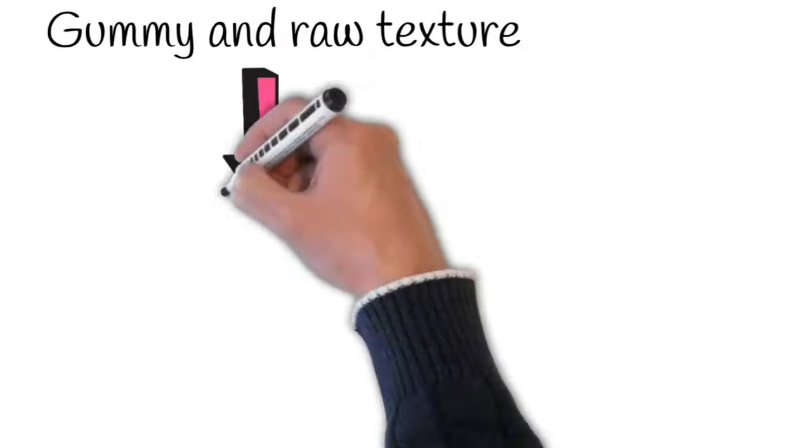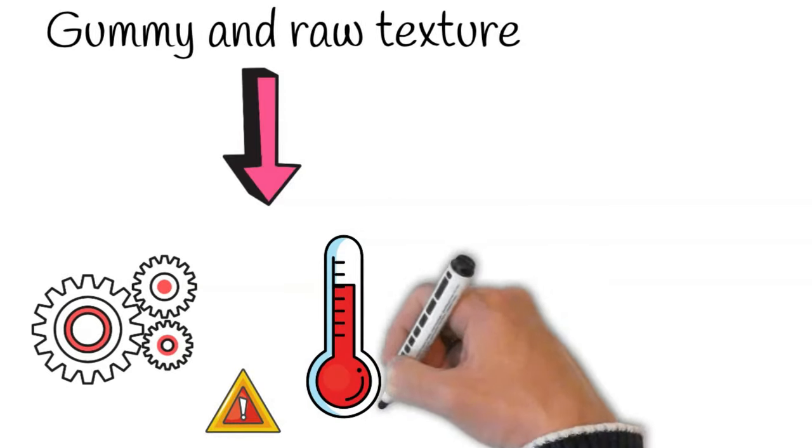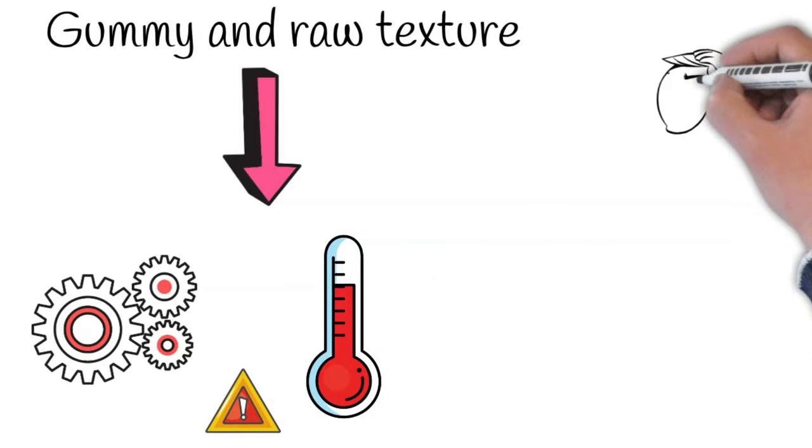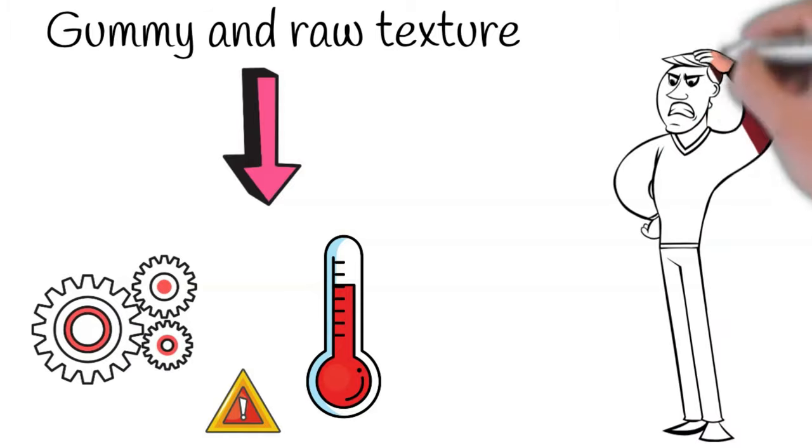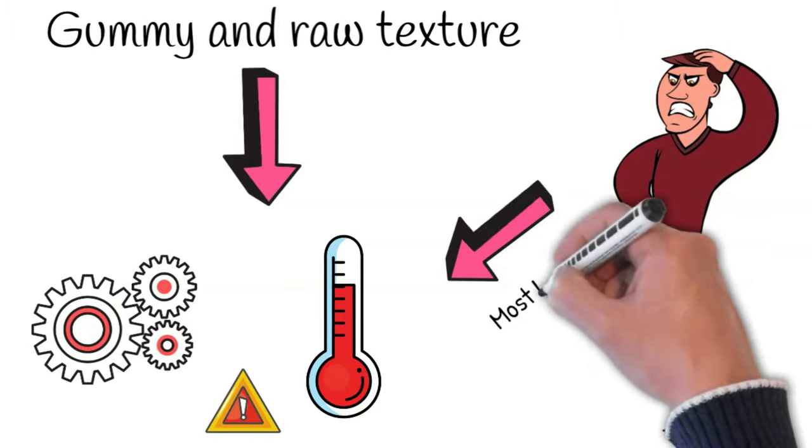Also, gummy and raw texture can indicate that the bread machine is not working properly and has a defective thermostat. Suppose you have eliminated all the other causes and this still keeps happening. In that case, the faulty thermostat is most likely to blame.